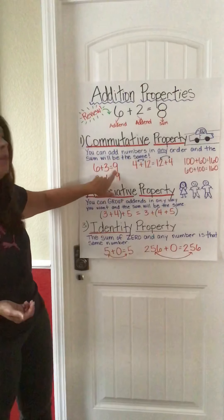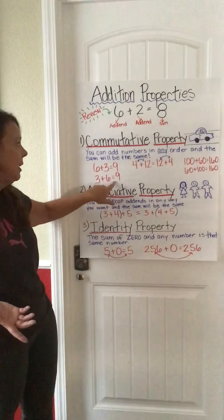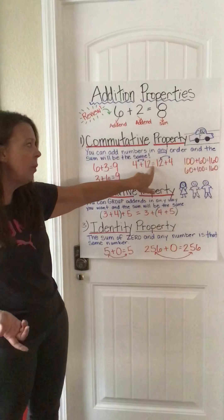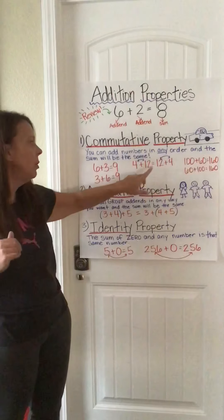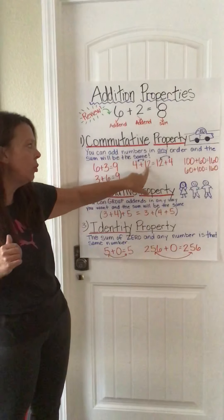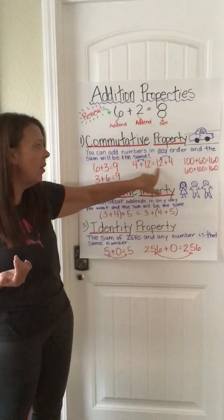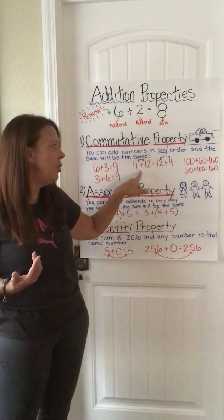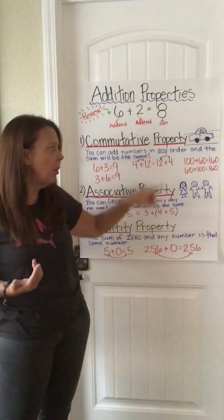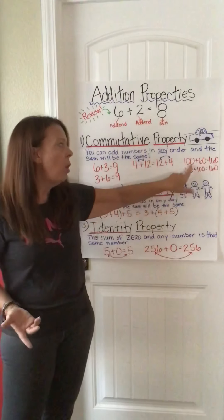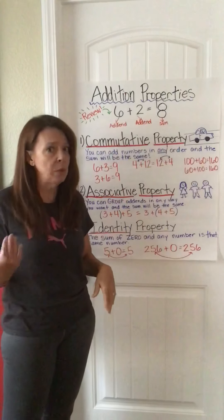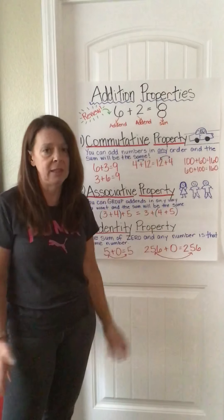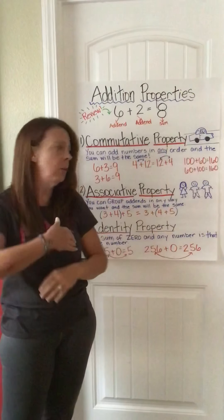So 6 plus 3 equals 9, and 3 plus 6 also equals 9. Here we have a balanced equation with the equal sign in the middle: 4 plus 12 equals 16, and 12 plus 4 equals 16. We have the same numbers on each side — they've just moved around. We can even do this with big numbers: 100 plus 60 equals 160, and 60 plus 100 equals 160. All I did was move those numbers around.